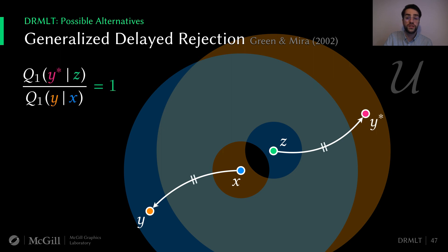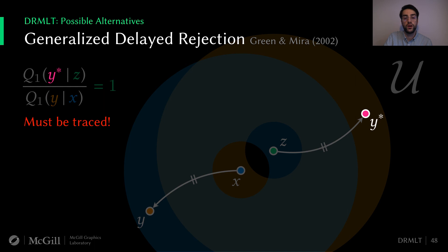There is an existing solution called the generalized delayed rejection algorithm, which proposes to use an intermediate state y* to circumvent the need to evaluate the ratio. This approach simply ensures that distances are kept equal so that the densities are the same. The problem in our context is that this new state y* needs to be traced to a path, and this framework doesn't directly allow us to accumulate the contribution of y* into our Monte Carlo estimate. So we must pay the full cost of tracing a light path just to get rid of our ratio.